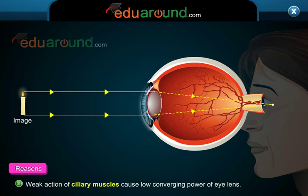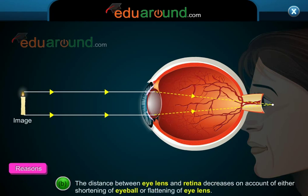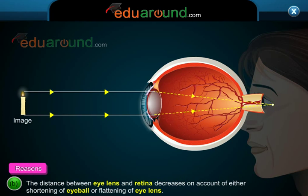Weak action of ciliary muscles causes low converging power of the eye lens. The distance between the eye lens and retina decreases on account of either shortening of the eyeball or flattening of the eye lens.